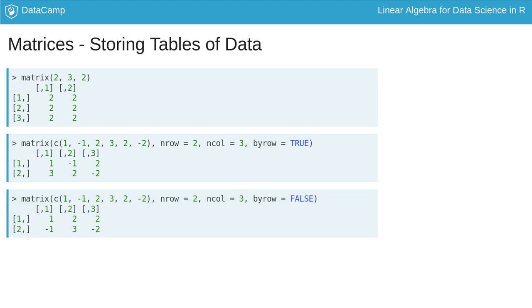Byrow tells R to make the matrix each row at a time. The default for byrow command is false.